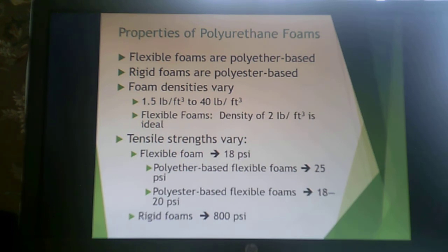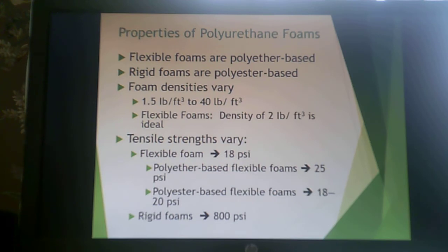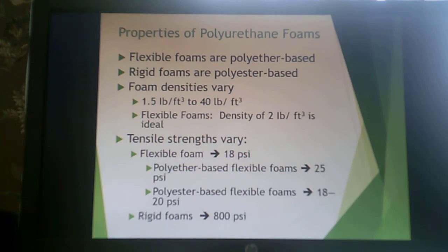For a polyurethane foam, we're talking about either polyether-based or polyester-based. Typically, flexible foams are polyether-based and rigid foams are polyester-based, but not always. Foam densities vary widely — for a flexible foam it's usually 2 pounds per cubic foot. Tensile strength also varies: flexible foams tend to be a little weaker, rigid foams a little stronger. You gain flexibility in flexible foam but give up strength; in rigid foam you gain strength but give up flexibility. Rigid foams are very friable — they break apart and are brittle.